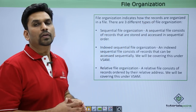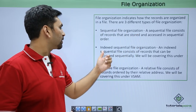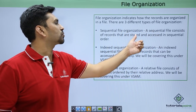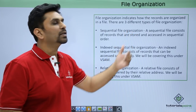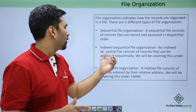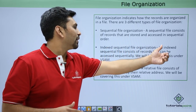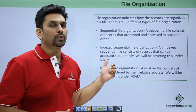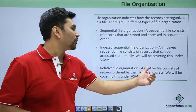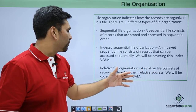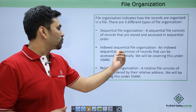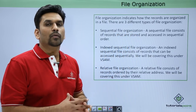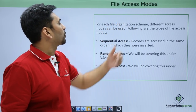We have three types of file organizations. One is sequential file organization, another is indexed sequential file organization, and the third is relative file organization. A sequential file consists of records stored and accessed in sequential order, and this organization can be for both VSAM files as well as PS files. Indexed sequential and relative file organizations will be covered under VSAM videos, as those two organizations can only be performed on VSAM files. Sequential file organization is for PS files.